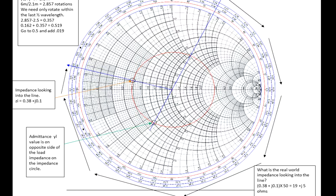Final point: how do we convert that source impedance back to a real-world, unnormalized impedance? The question is: what is the real-world impedance looking into the line? We simply take the normalized value of 0.38 plus J1 — it's plus J because we're still in the inductive reactive hemisphere of the Smith chart — and multiply by 50. We find a real-world input impedance of 19 plus J50 ohms.